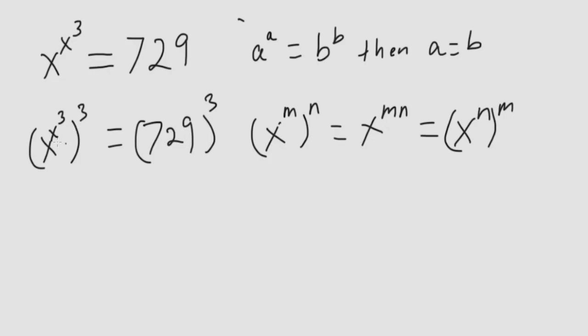So we can interchange these two, x cubed and 3, to have x cubed to the 3. I just need to interchange these two. And 729 is the same as 9 cubed, so 9 cubed cubed.